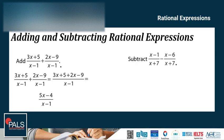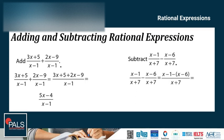Let's have a subtraction example. We have x minus 1 over x plus 7, minus x minus 6 over x plus 7. Since the denominators are the same, we can proceed to subtracting the numerators. Subtracting, we have x minus 1 minus x plus 6, over x plus 7. Simplifying, we have 5 over x plus 7.